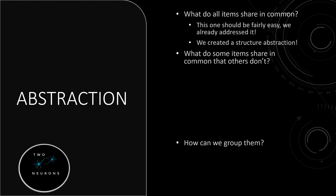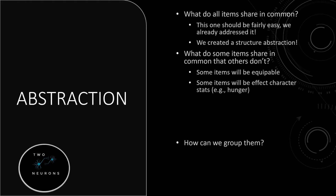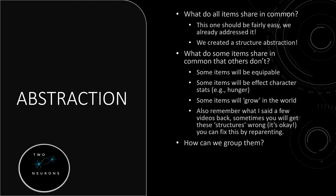What do some items share in common and others don't? Some items will be equippable and some won't be, so we can create an abstract class for our equippable items. Some items will affect character stats like health, hunger, stamina. Some will grow in the world. And as a reminder from a few videos back, sometimes you'll get these class structures wrong — you'll get the hierarchy of child-parent classes just slightly incorrect, and that's fine. You can always fix this by reparenting, by creating a new parent and reparenting to those.